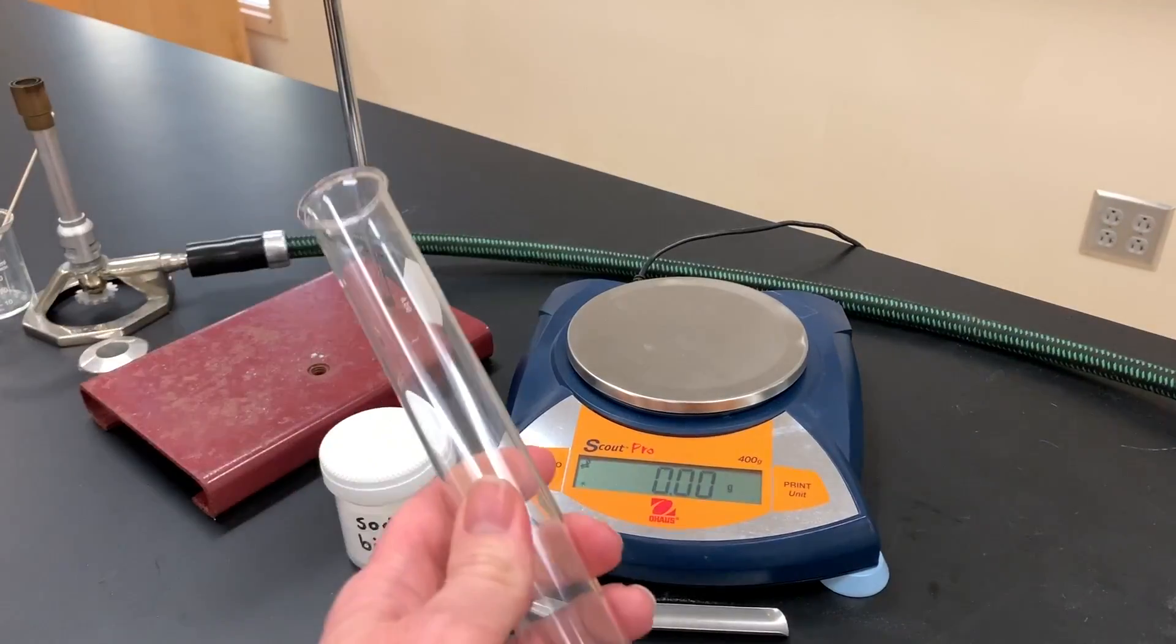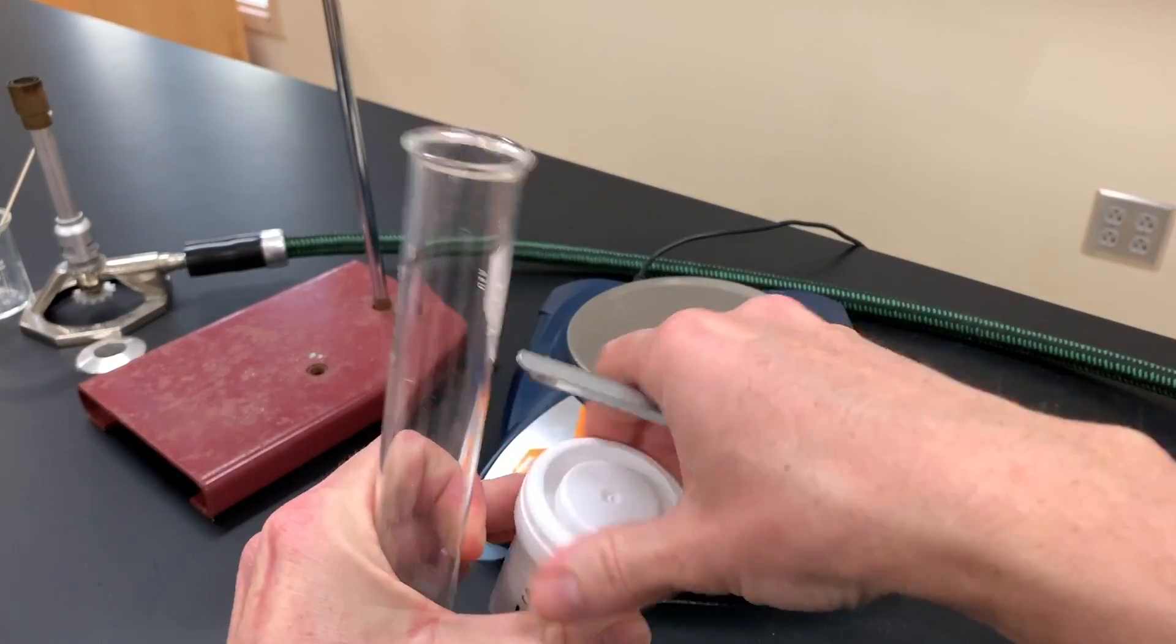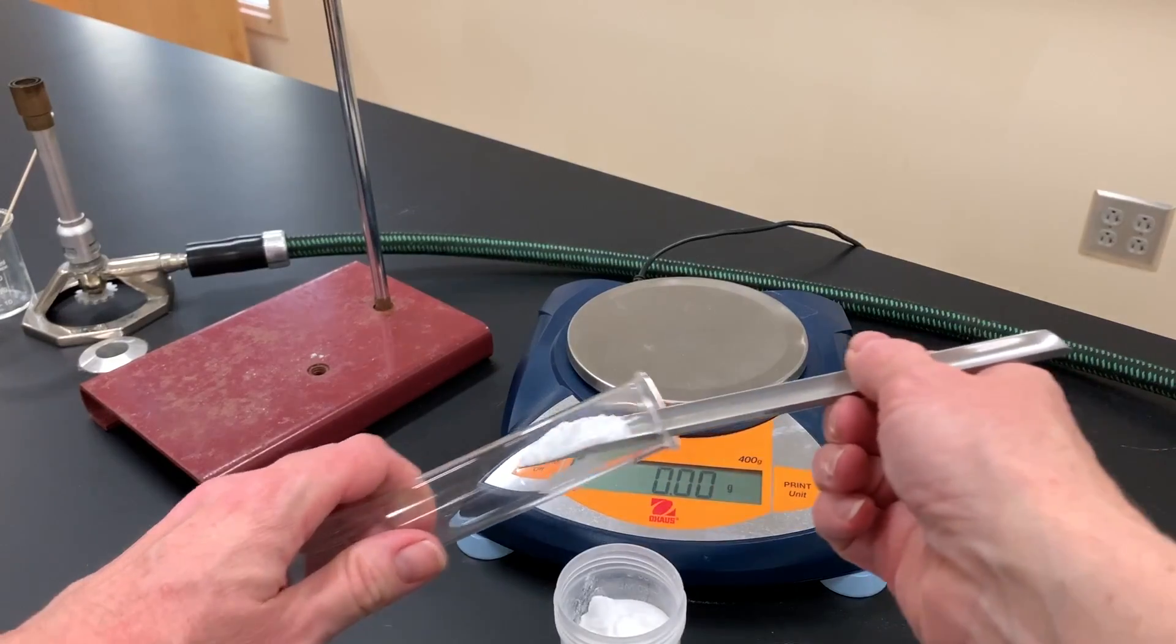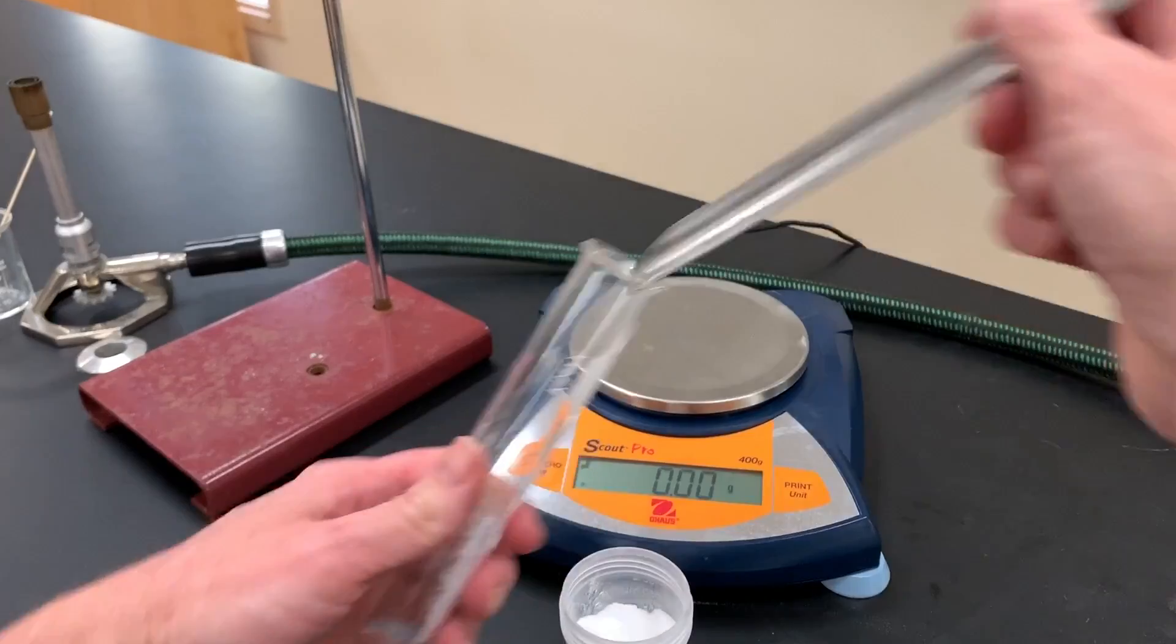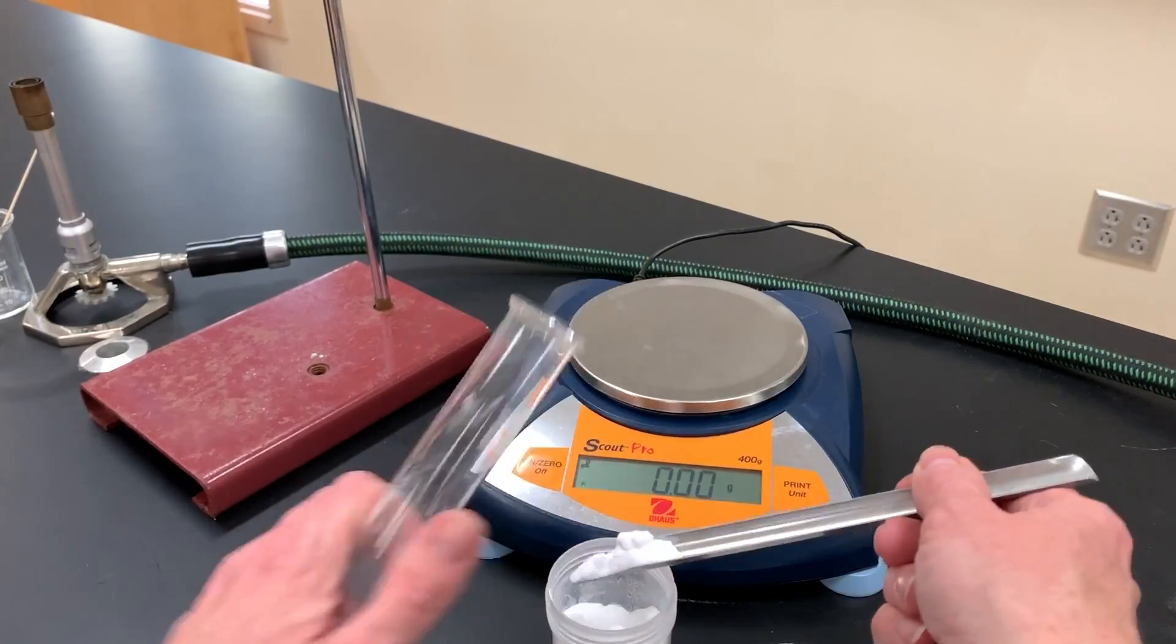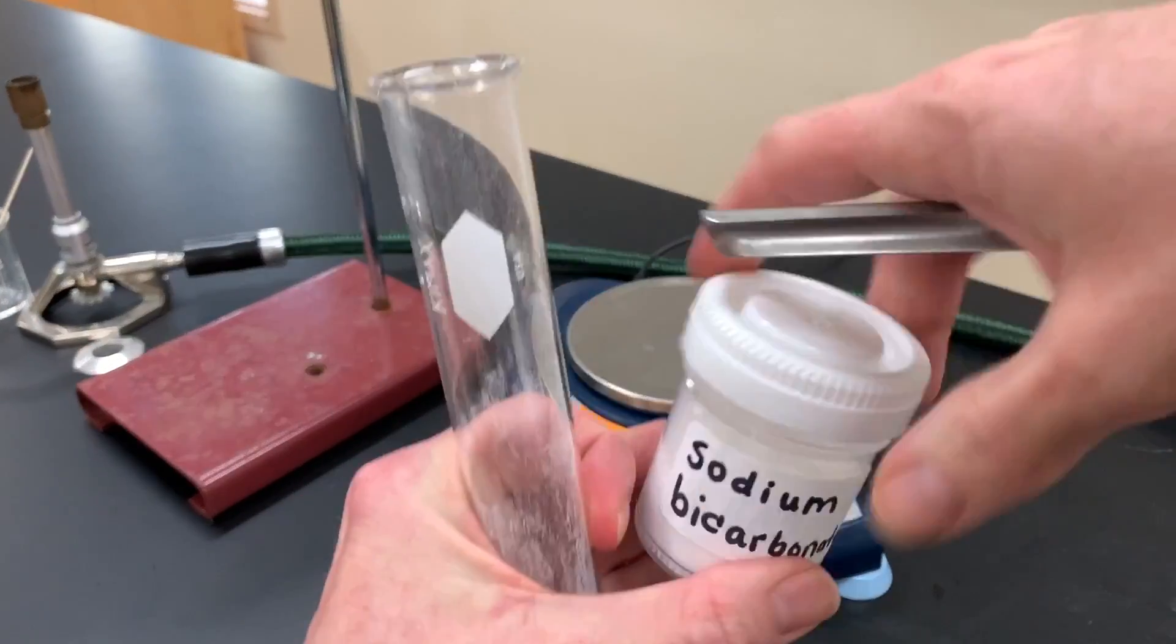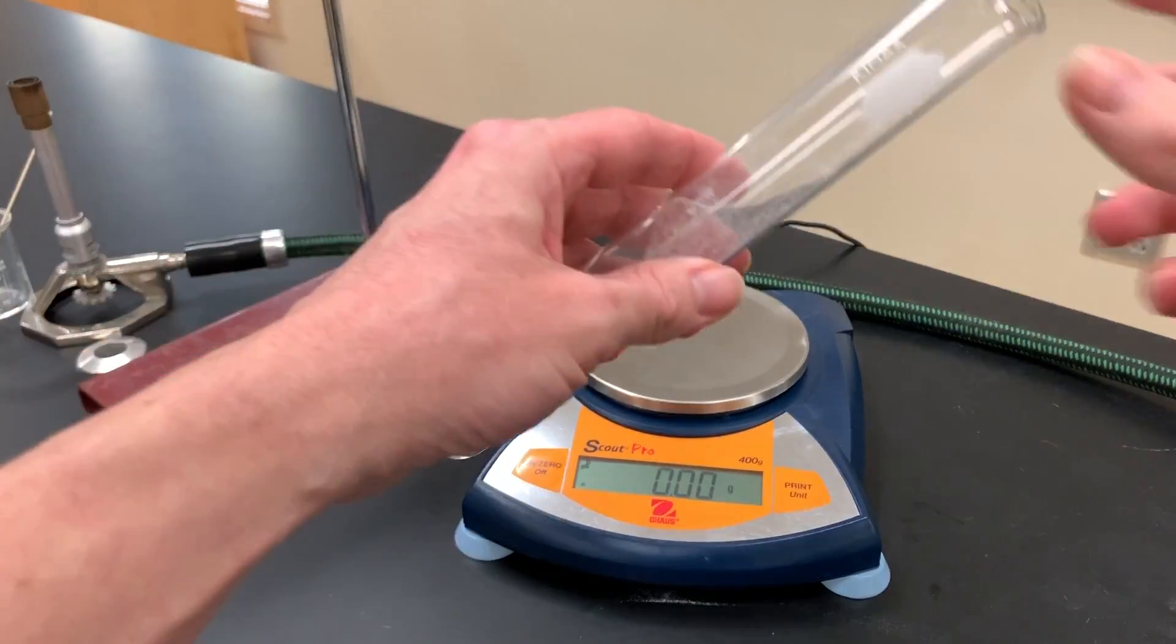The next step is to grab your test tube, a scoopula, and your sodium bicarbonate and add, in my case, about three scoops full to the bottom of the test tube as best as I can. The amount really doesn't matter as long as it's not too much to heat and you've got enough to measure a change in mass with the balance that you have.